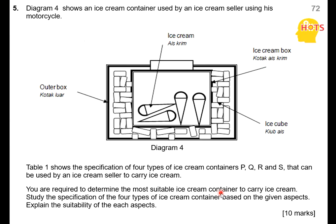Step by step, slowly, and do your calculation. This is an example of an SPM Physics Paper 2, Section C question. Diagram 4 shows an ice cream container used by an ice cream seller using his motorcycle — with an outer box, ice cubes or dry ice inside, and the ice cream placed within. Table 1 shows the specifications of 4 types of ice cream containers P, Q, R, and S that can be used by an ice cream seller.